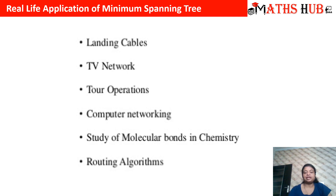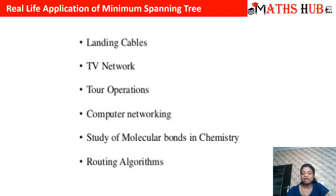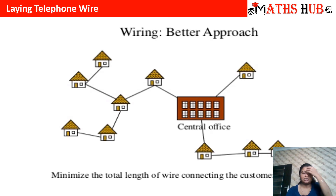What are the real life applications of minimum spanning trees? Spanning trees can be used for laying cables, TV networks, tour operations, computer networking, and the study of molecular bonds in chemistry, as well as leveling computer wires. For example, telephone wires are laid from a central office to various homes — you have to minimize the total length of wire. This is where a minimum spanning tree is required: all vertices should be covered but in minimum length.